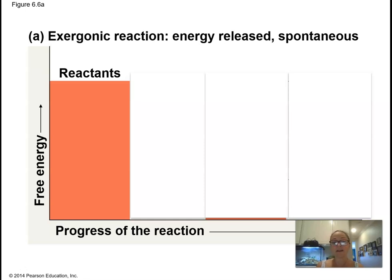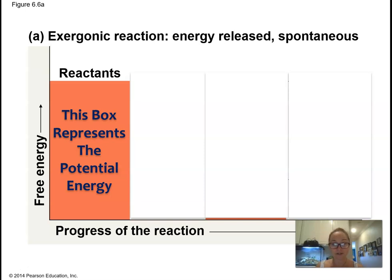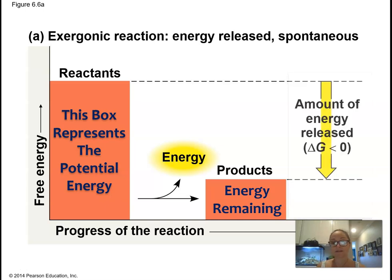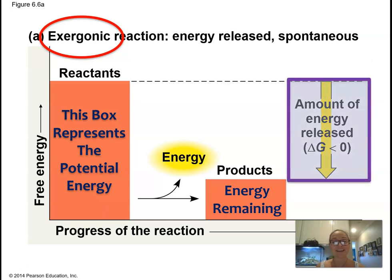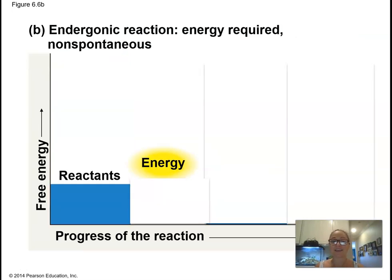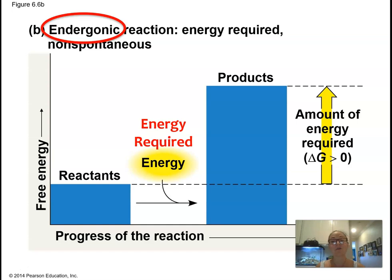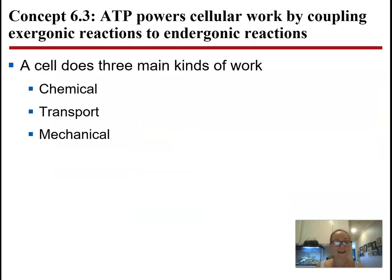In an exergonic reaction, the potential energy released means the products have less potential energy than the reactants — delta G is negative. In an endergonic reaction, energy must be input, so the potential energy of the product is greater than the reactants — delta G is positive.